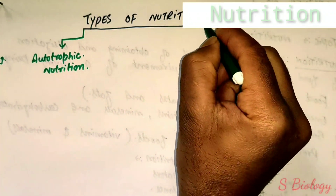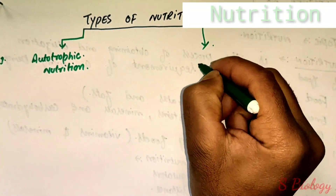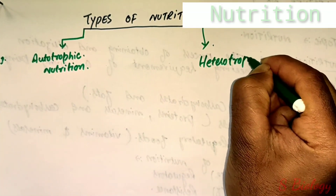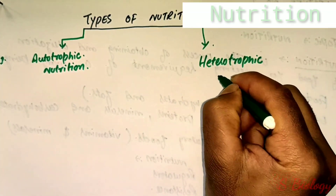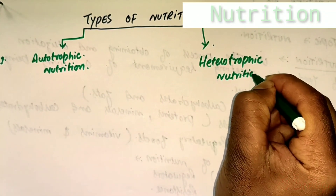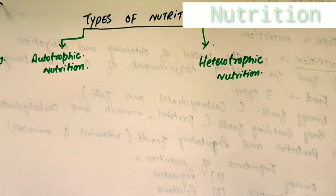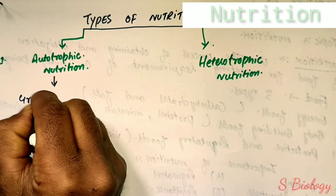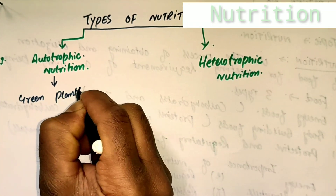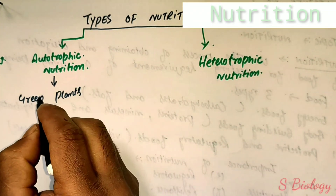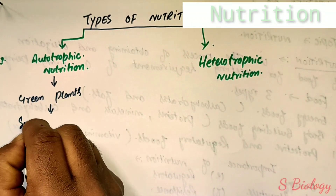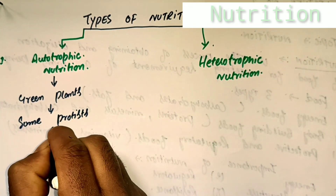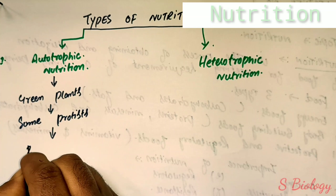Autotrophic nutrition is the mode of nutrition in which organisms are able to build up their own organic food from inorganic raw materials with the help of outside energy, specifically sunlight. Organisms that prepare their own food with the help of sunlight include green plants, some protists, and some bacteria.